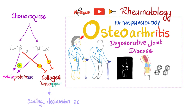So grandpa and grandma might lose their cartilages, especially their articular cartilages. Is this bad? Of course — because now bone will rub against bone, which hurts.